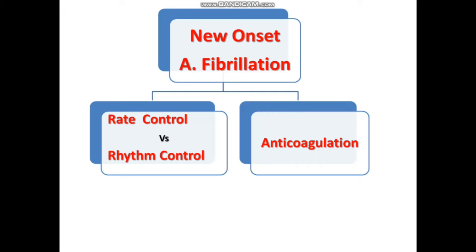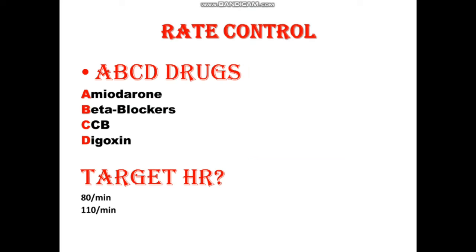First of all we will discuss about rate control. Rate control is usually the first strategy whenever any patient is diagnosed with atrial fibrillation. The drugs we use for rate control can be remembered with the mnemonic A, B, C, D: amiodarone, beta blocker, calcium channel blocker, and digoxin. We will discuss each in detail.